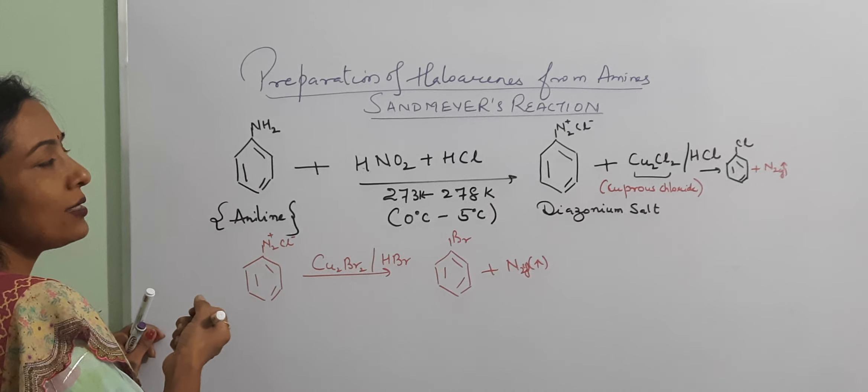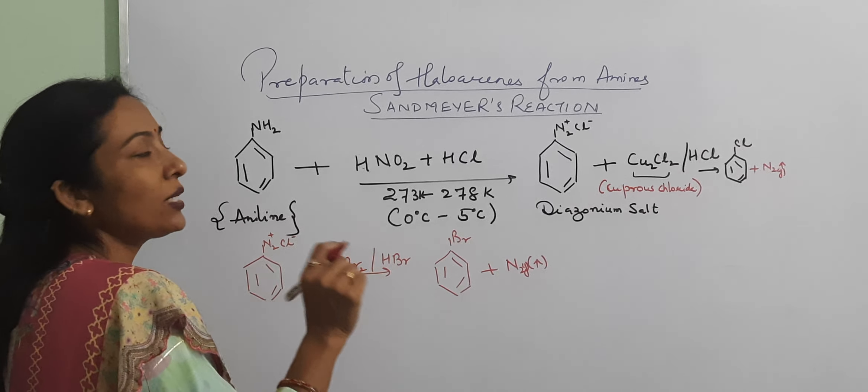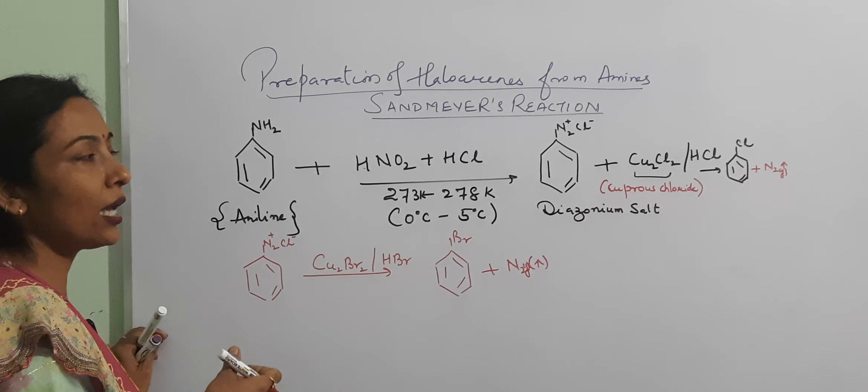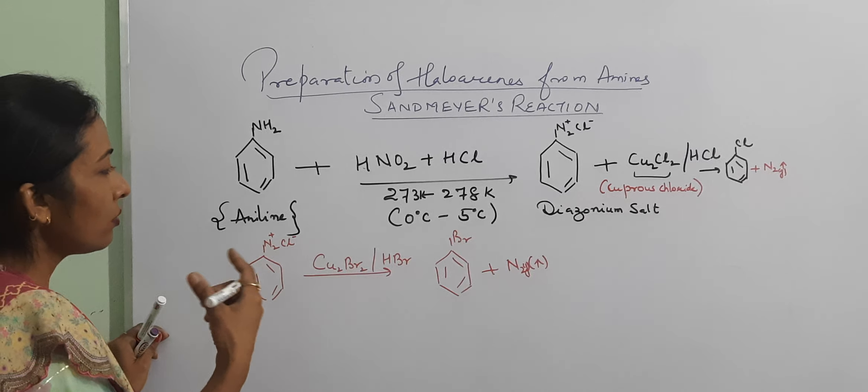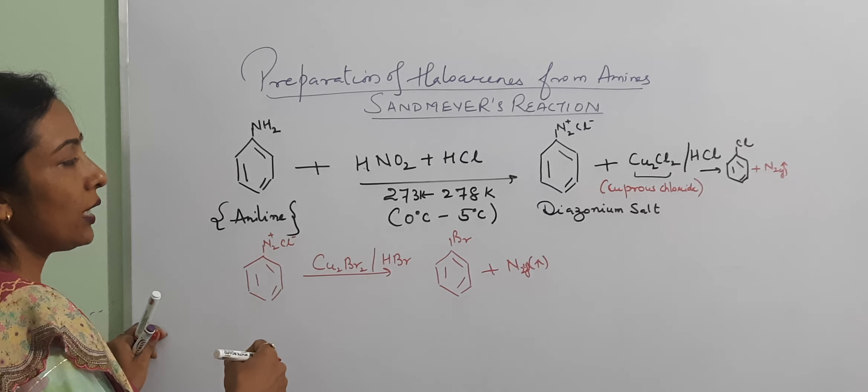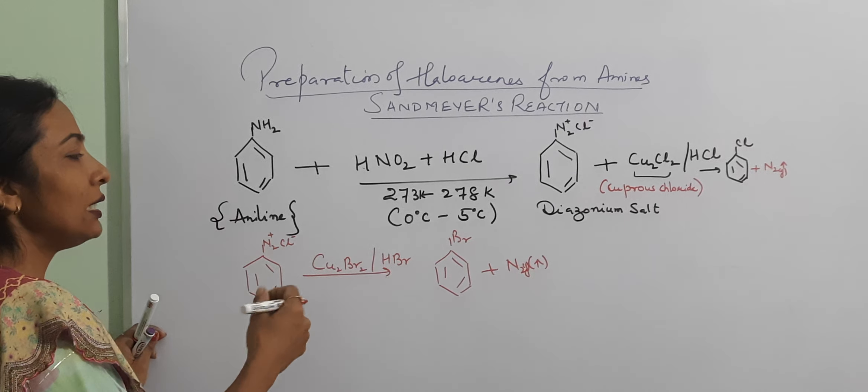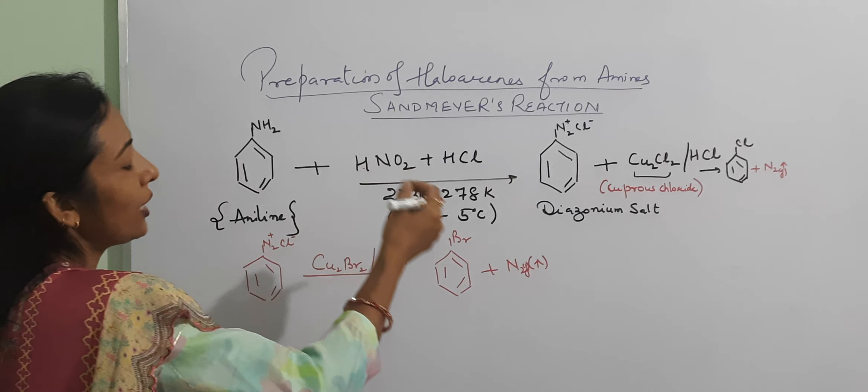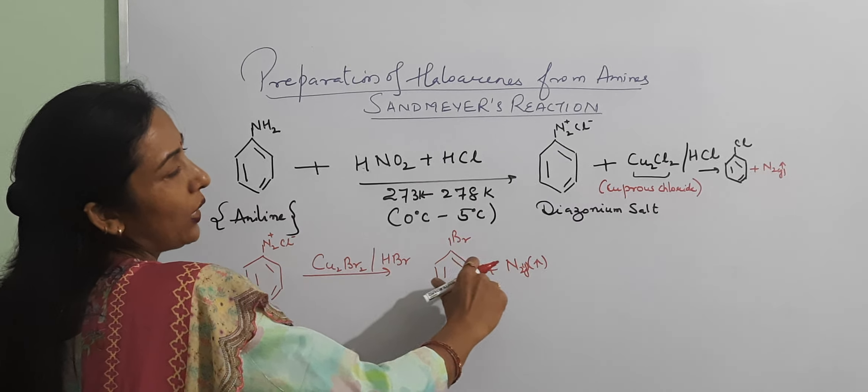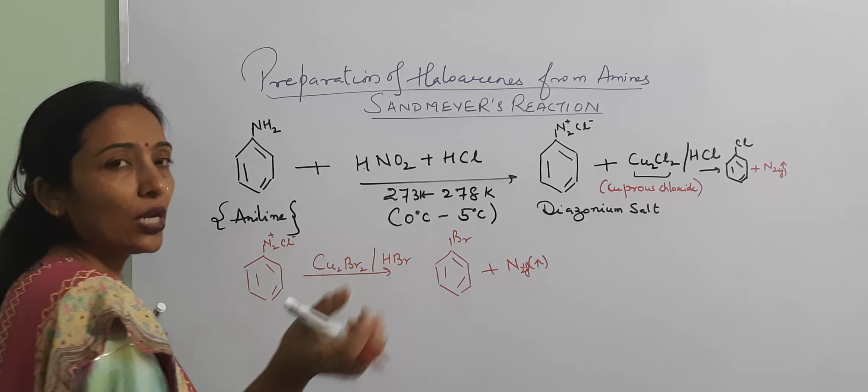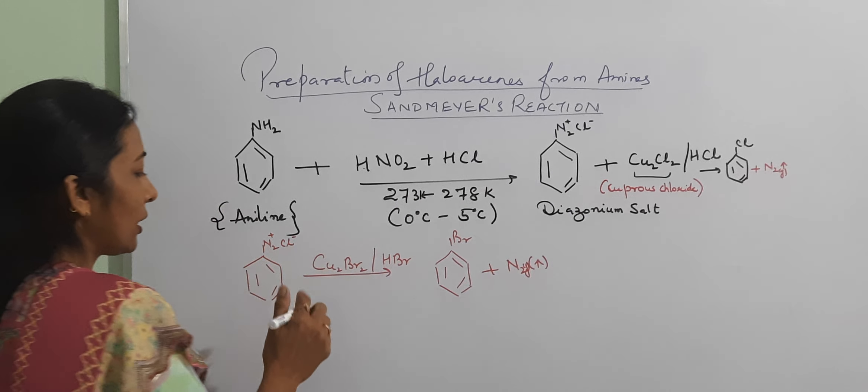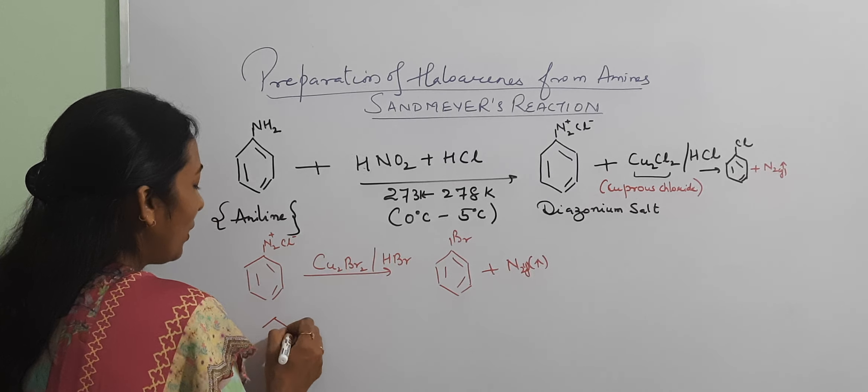If we want to create iodobenzene, then it will become so easily when we use potassium iodide or sodium iodide. We will create iodobenzene.